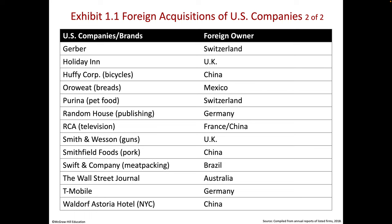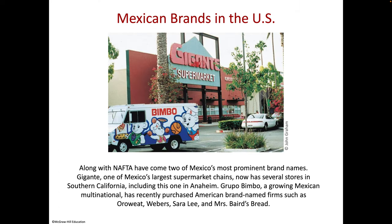You can see some other examples: Holiday Inn from the UK, Huffy out of China, and the Wall Street Journal from Australia. One example I always see in every convenience store, even in rural Alabama and Georgia, are these Bimbo snacks. I always think — is that not a classic example of a word meaning something different? We know what bimbo means in English, yet that's what they use as a brand on their snacks.